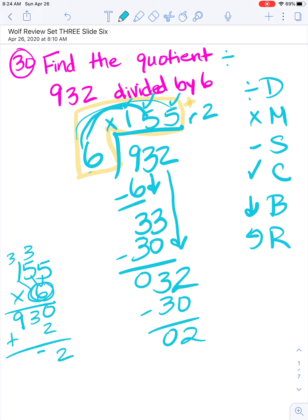It doesn't match our dividend yet because we need to add our remainder. Now when we look, it matches the number we started with. So our answer is 155 remainder 2.